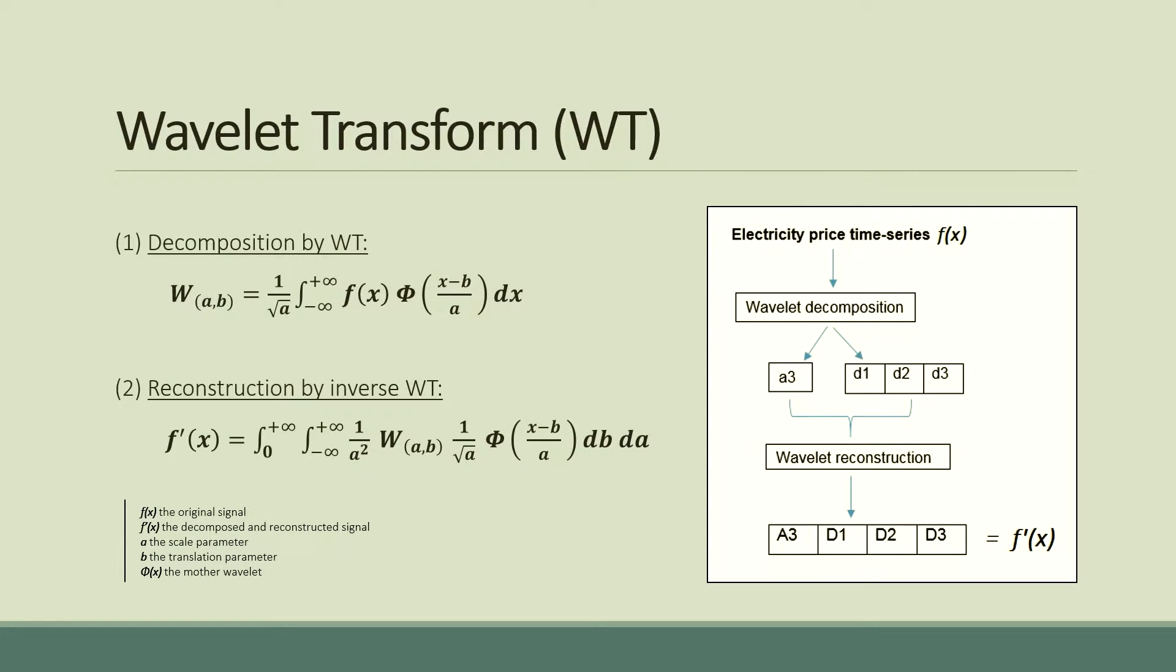As a first step of our forecasting method, Wavelet Transform is used to decompose the original price time series into one approximate series, A3, and three detailed series, D1, D2 and D3, where the former holds for the general trend and the latter illustrate the time-varying volatility.